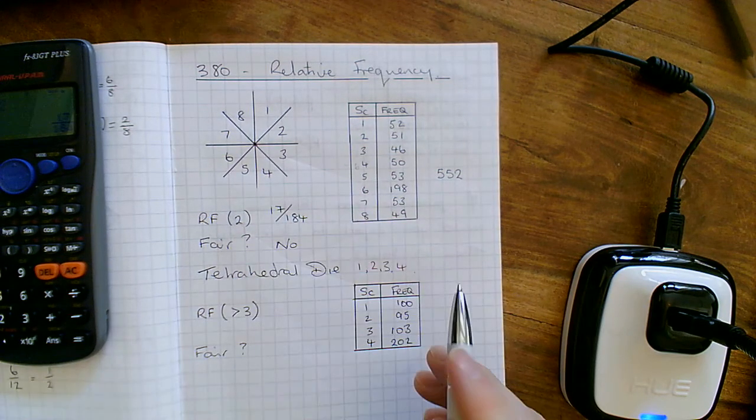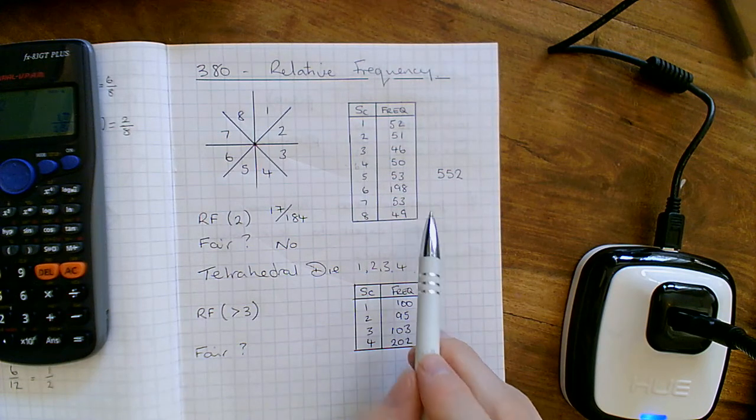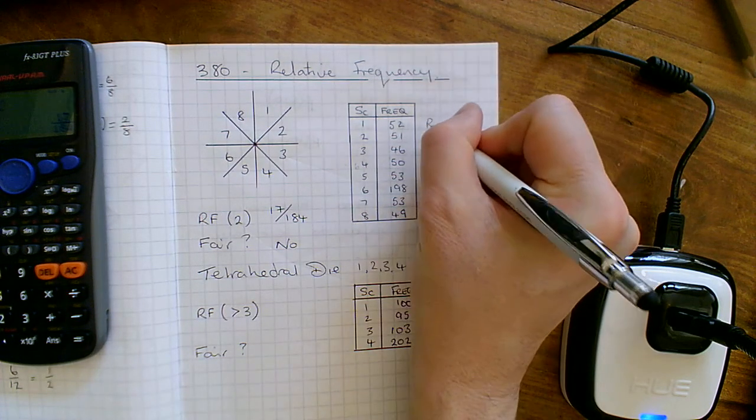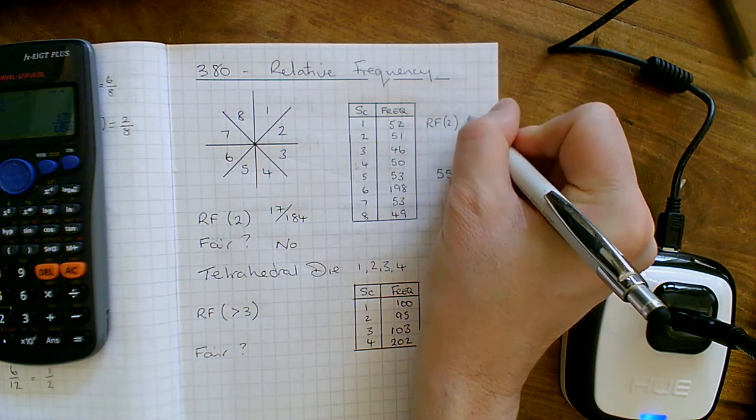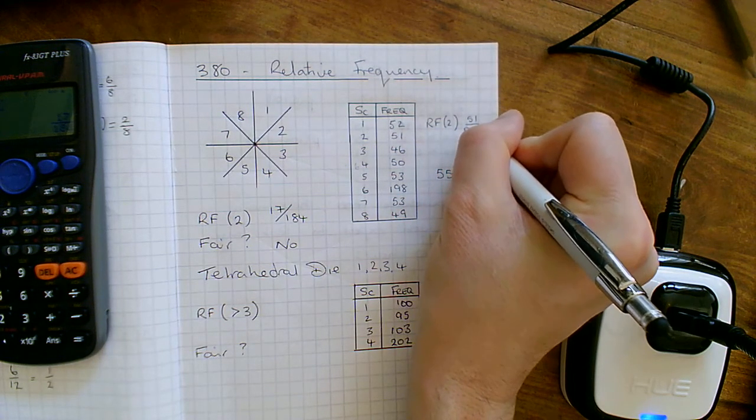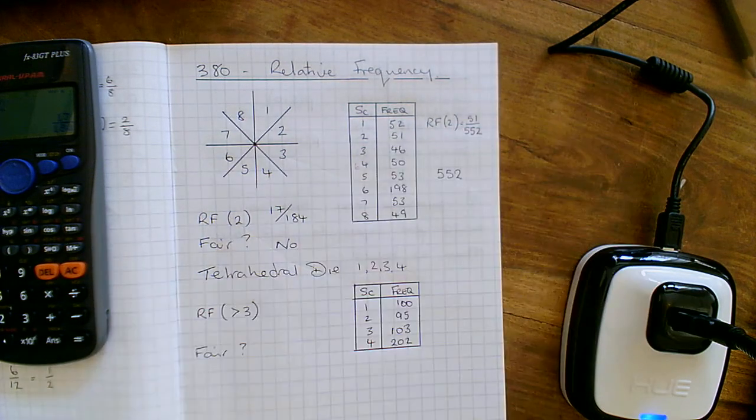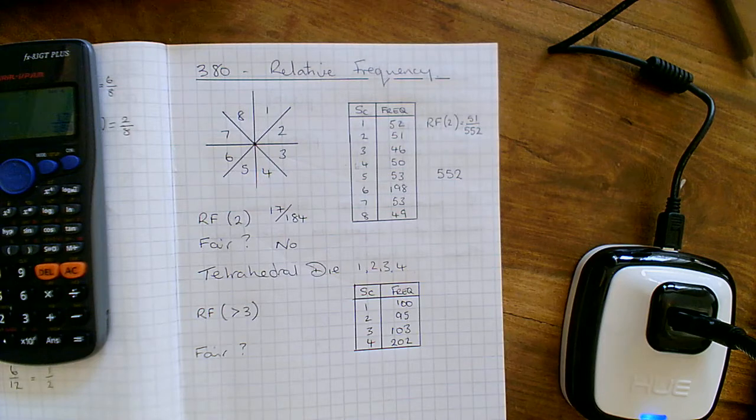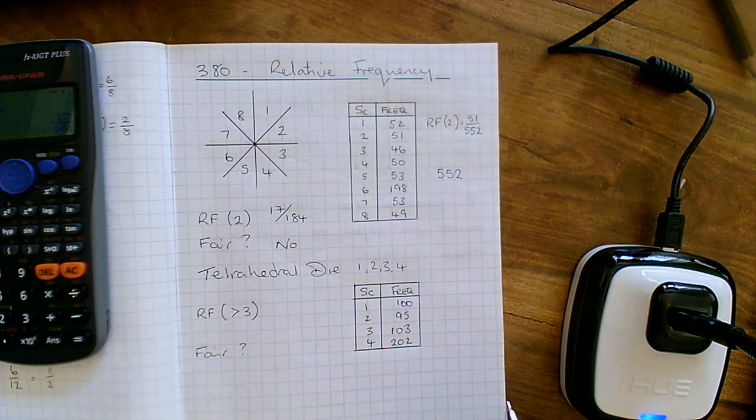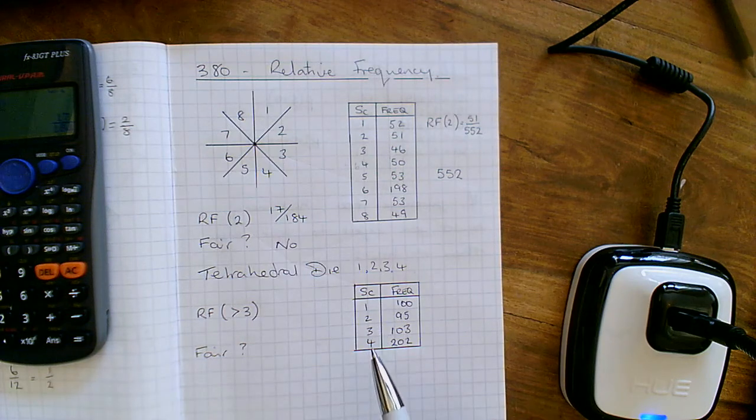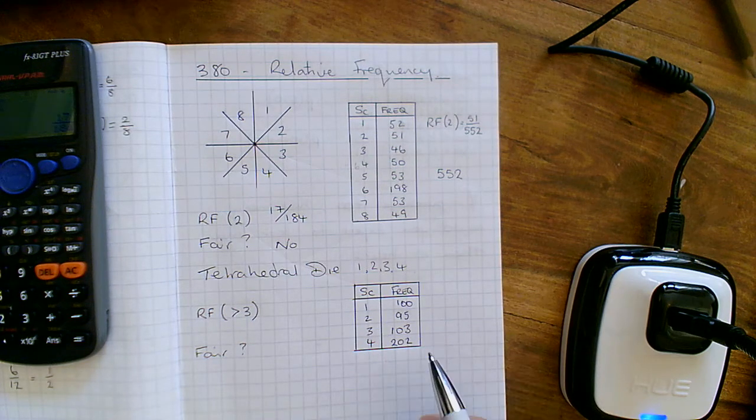Now, for most probability questions, I would normally just go with the fact that the relative frequency, if we're getting a 2, is 51 out of 552. But you've got to be careful with my maths because it often wants you to cancel things down. You don't always have to cancel things down in probability, but my maths often want you in a particular format. So I would just do that on the calculator and see what comes out.